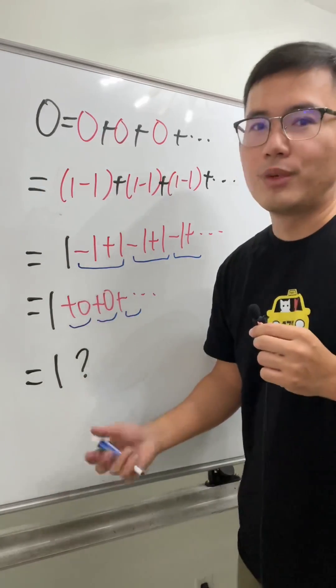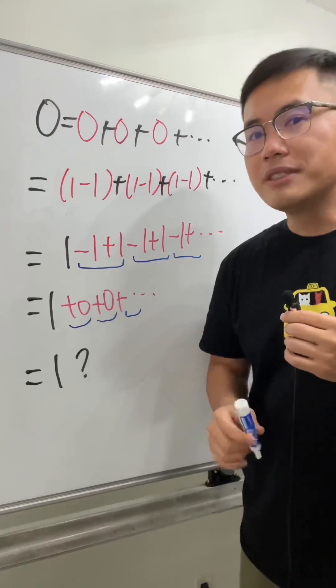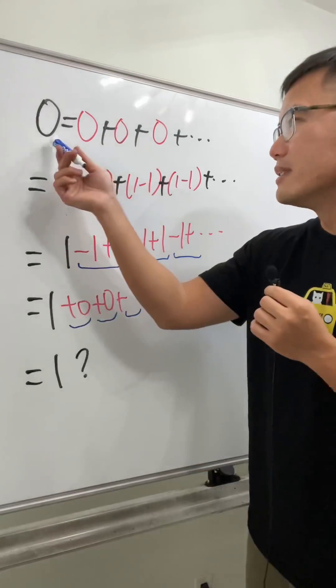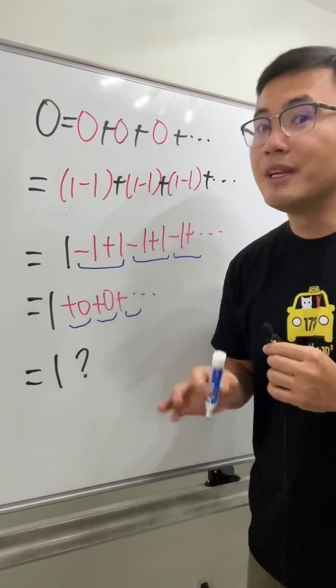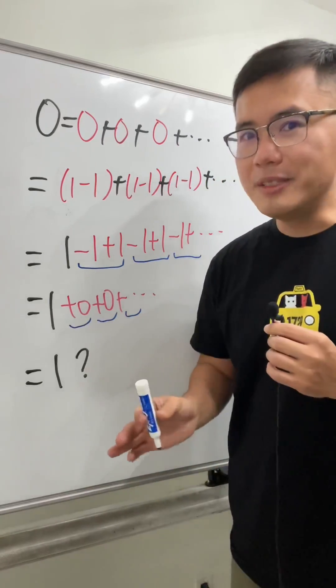So what's going on here? Here's the deal. Originally we are saying that zero is equal to zero plus zero plus zero plus infinitely many of them. This is okay—it's redundant, but it's okay.